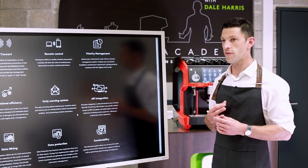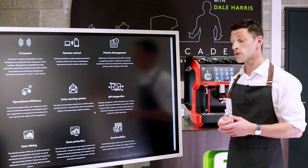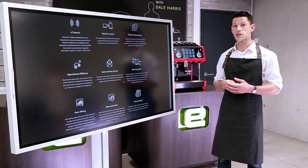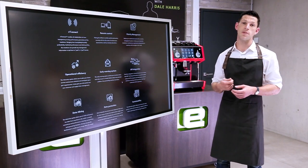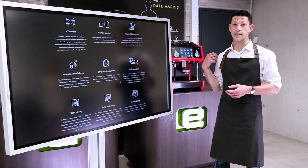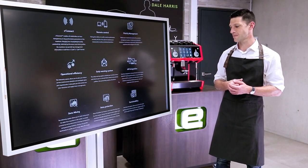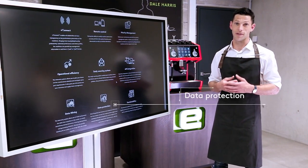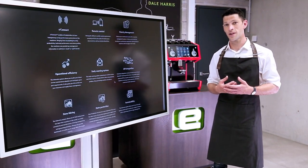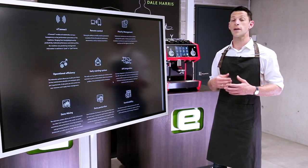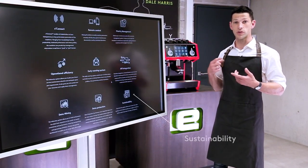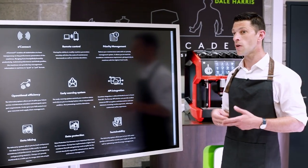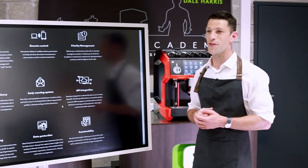We can also use that information when we need to make a change. We can go in directly from the portal, make changes to the menu screen and the recipes of individual drinks, and just execute them from our desks. All of that information is protected because data is so precious. And with it, we can also make a more sustainable business — reducing our water use, making sure the machines are cleaned and maintained at the right level. All of this comes together in one place.